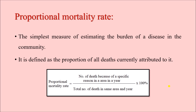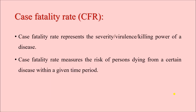Proportional mortality rate: in a given community we can find out what proportion of deaths are occurring because of a particular reason. It is the simplest measure of estimating the burden of a disease in terms of mortality. It is defined as the proportion of all deaths attributed to a particular cause: number of deaths due to a specific reason in an area in a year, divided by the total number of deaths in the same area in the same year, multiplied by 100. For example, if the proportional mortality rate due to tuberculosis is 5%, it means that out of 100 deaths, 5 are due to tuberculosis.